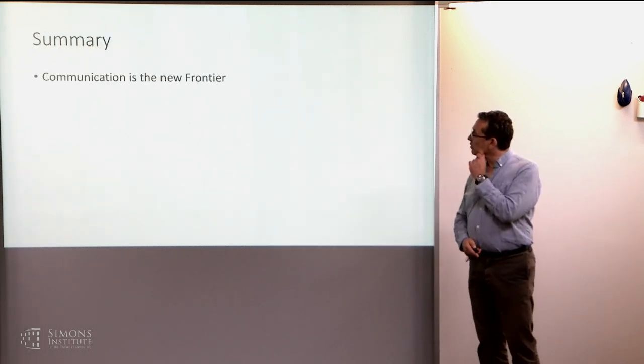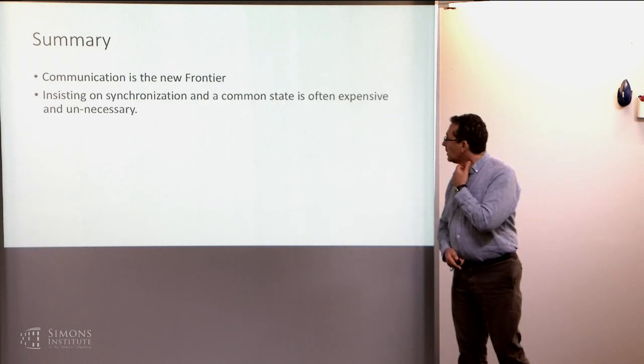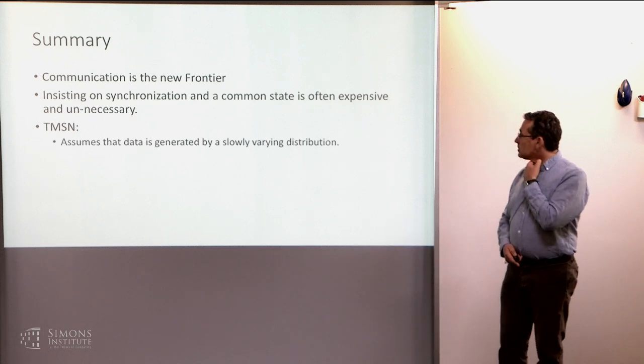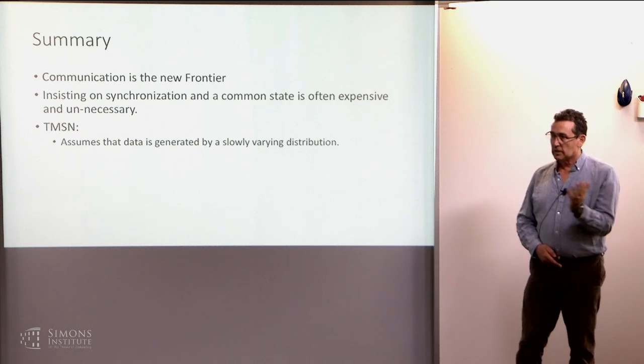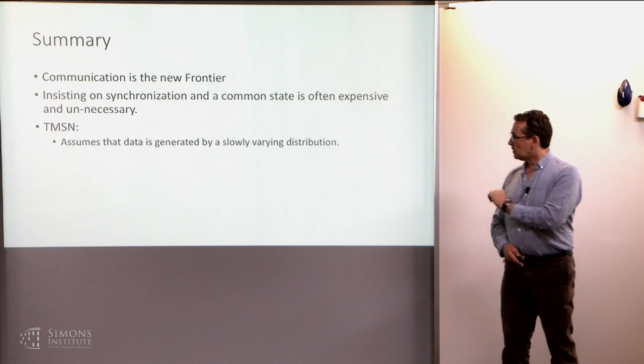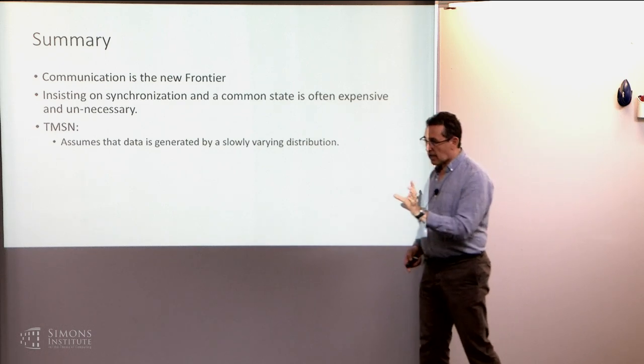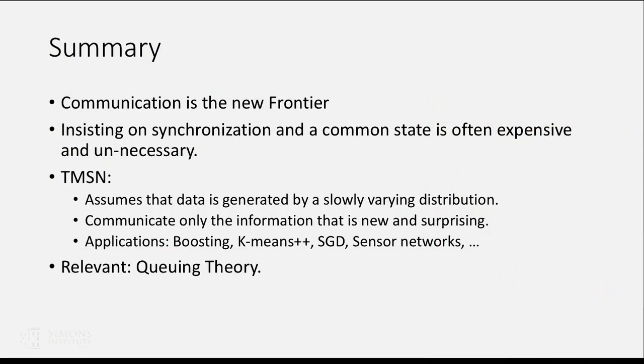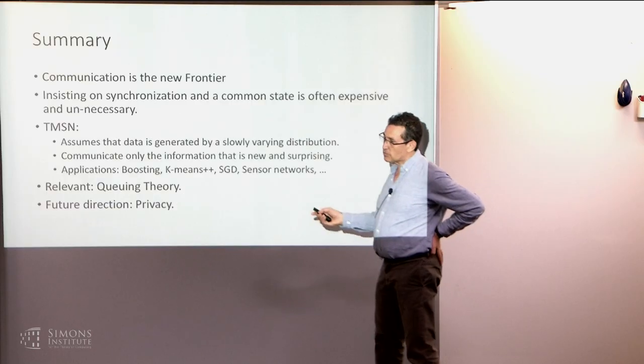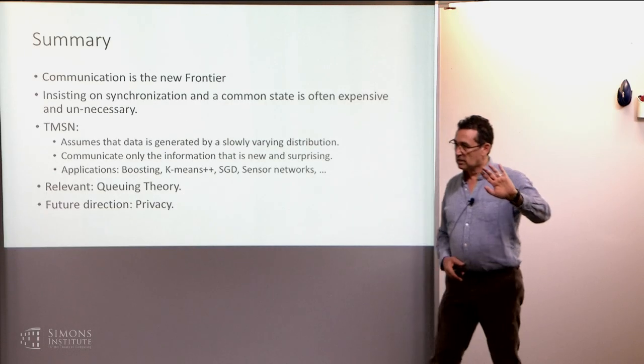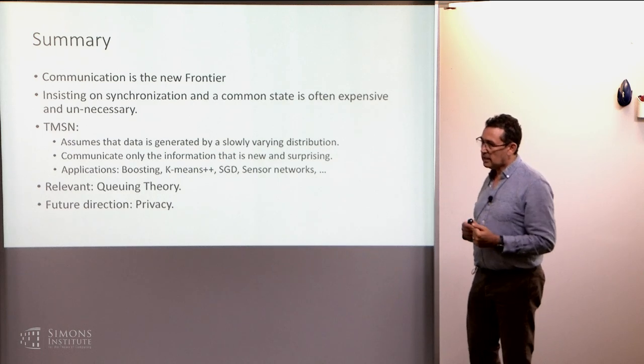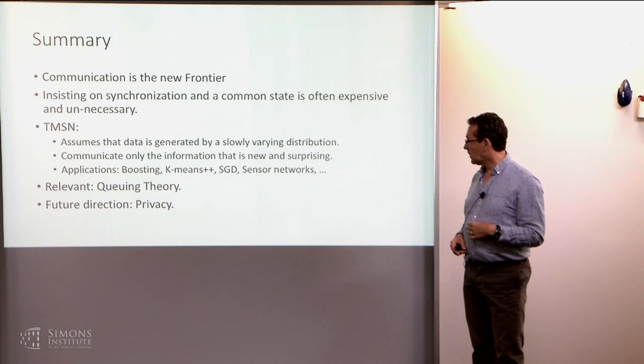To summarize, so I hope I convinced you, at least some of you, that communication is the new frontier. Insisting on synchronization and common state is often expensive and unnecessary. TMSN assumes that the data is generated by a slowly varying distribution. So it's a strong assumption, but it's an assumption that holds a lot in real life. If you have a distribution, it's slowly varying, but it's still almost IID on the short scale. You communicate only the information that is new and surprising, implications, and relevant to this is queuing theory. Now, one thing that I'll just end with that I think is kind of intriguing is how can you relate, how can you use this for privacy? We're sending much, much less information. Maybe if we're sending so much less information, we can protect the privacy. So maybe it's a potential way of getting to privacy through improving some other thing. So that's it. Thank you.